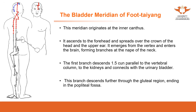The meridian originates at the inner canthus. We've mentioned quite a few times that some meridians meet here, such as the stomach meridian — from the nostril, traveling back to the bridge of the nose and also the inner canthus, where the stomach meridian meets the bladder meridian. That's where the bladder meridian starts, and from there it goes all the way up, ascending to the forehead, spreading over the crown of the head, past the upper ear, emerging from the vertex, and entering the brain.